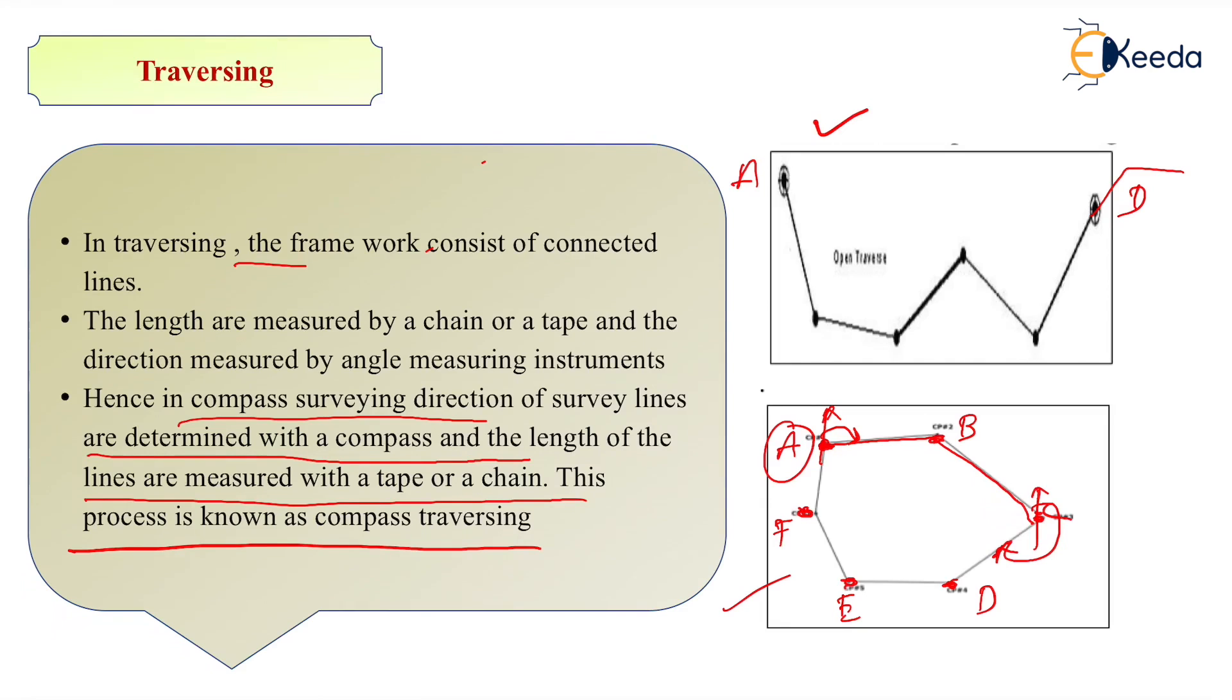And then we can compute the included angles as well as excluded angles if required. So whenever we have to find out or do a survey of a particular building or particular closed object, we have to use closed traversing.